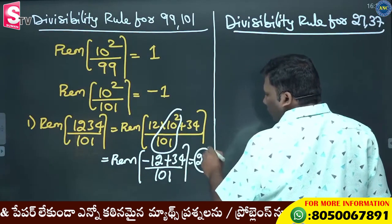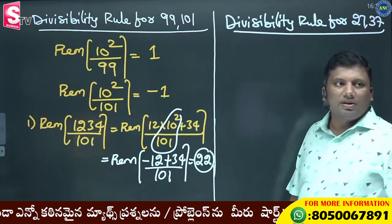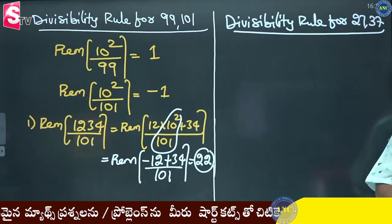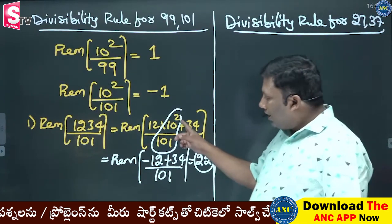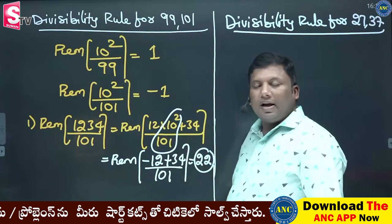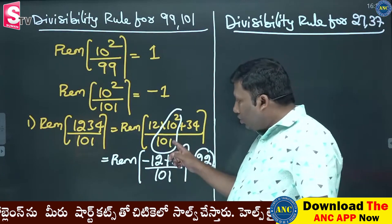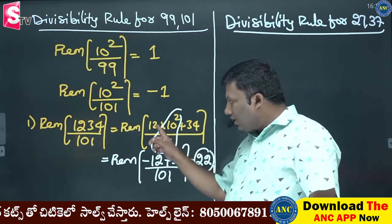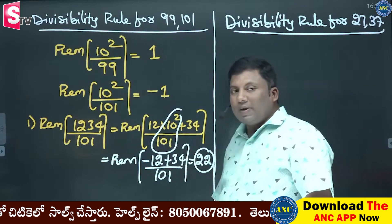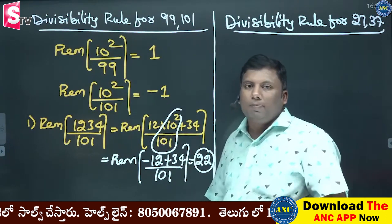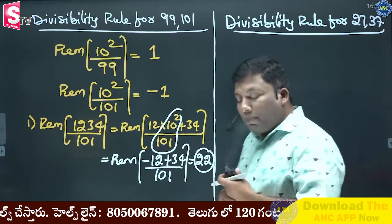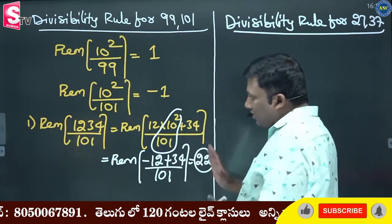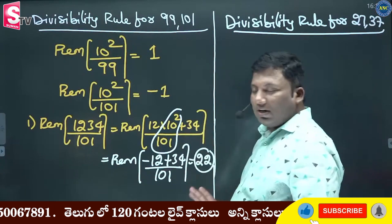Minus 1. So 34 minus 12 equals 22. 10 square divided by 101: 101 ukattl, negative reminder is minus 1. So minus 182 plus thirty equals 34 minus 18, giving 22. The answer to the first one is 22.